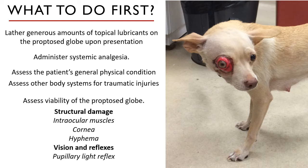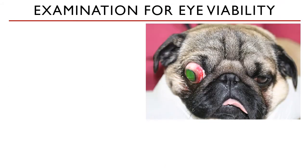Will it even return to its normal function if we put it back? These questions must be answered for you to provide the correct treatment. There are two general things we need to check: the structural damage on the eye, and the vision and reflexes. Also note that proptosis in brachycephalic breeds like pugs happens so often because of their inherent anatomy — they have shallow orbits.